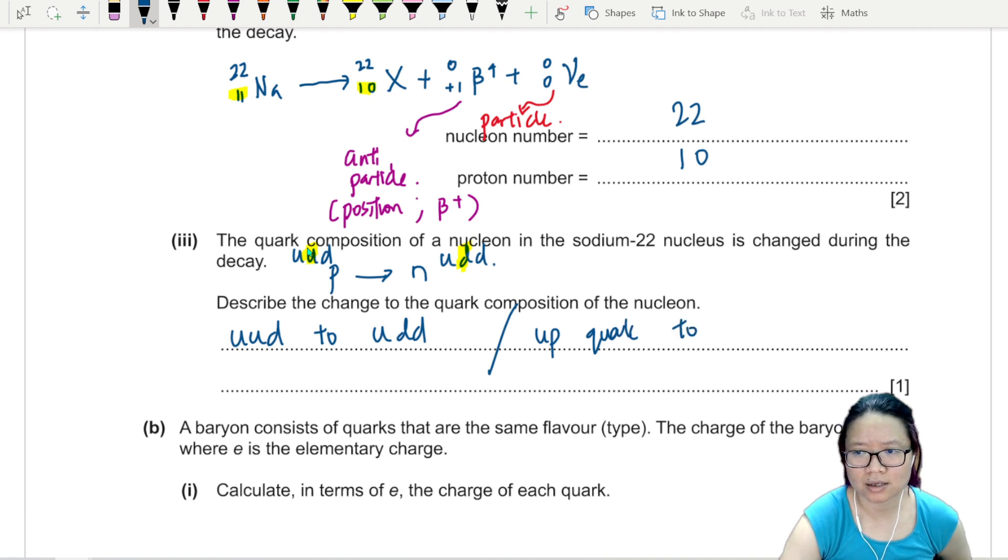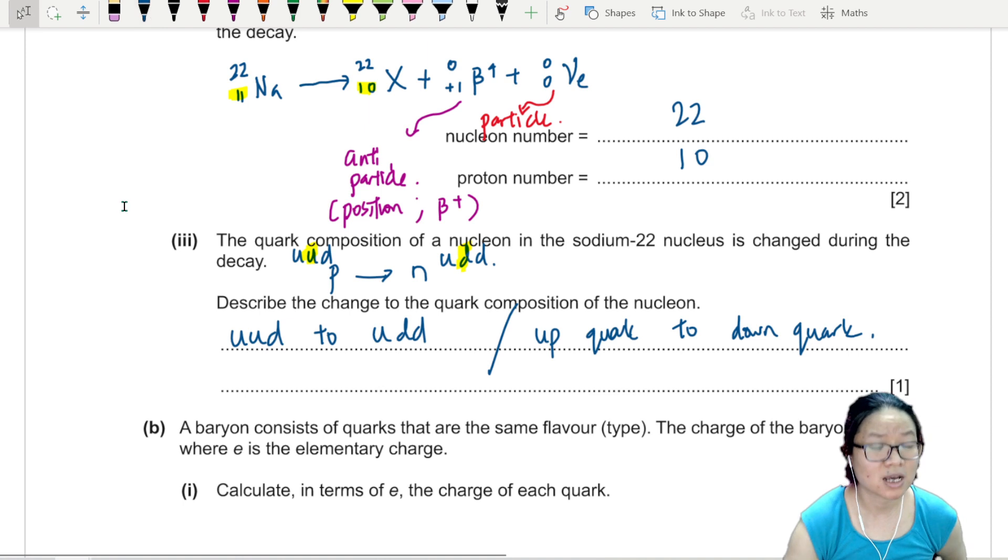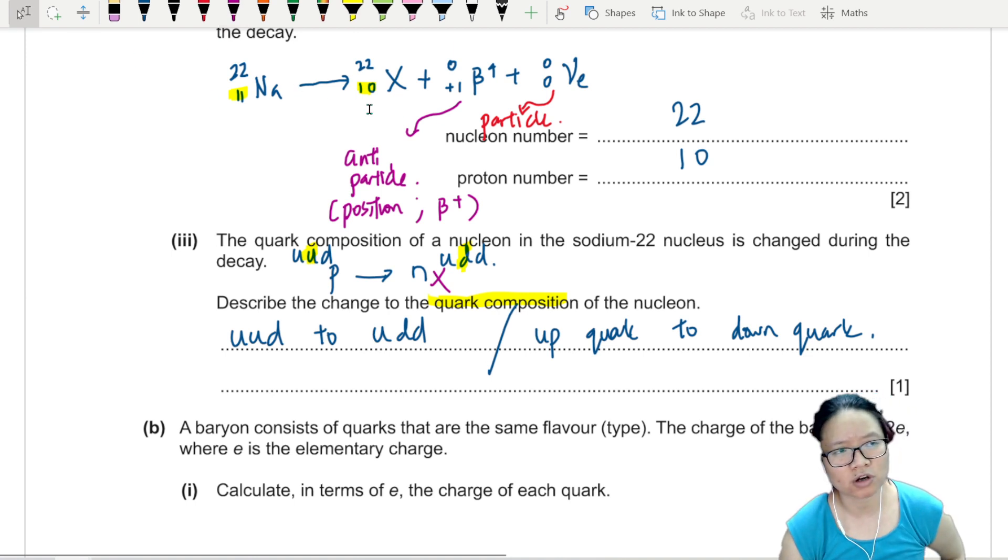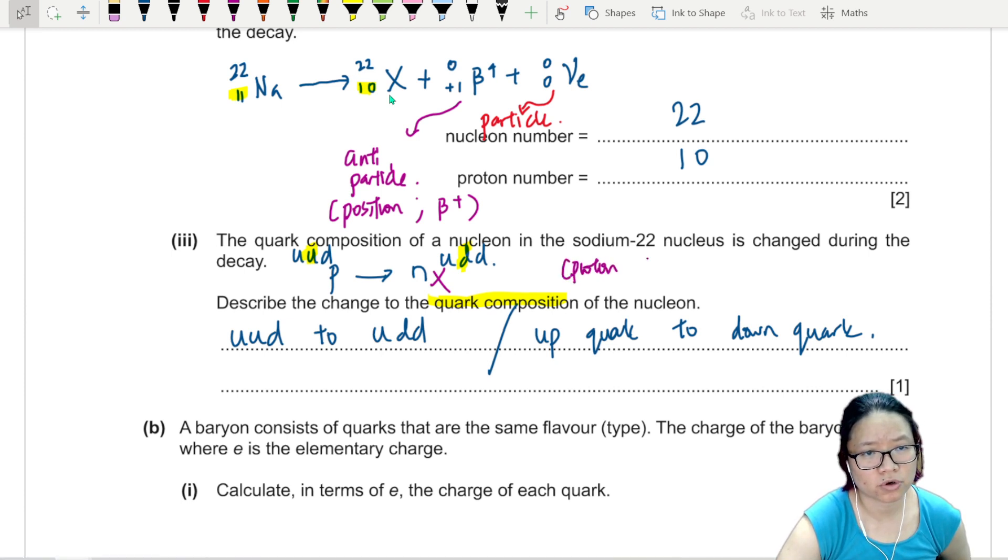If you write proton to neutron, then cannot. You're not answering the quark. How do I know the proton become neutron? Because the proton number dropped by one. Proton number decreased by one. Or you are familiar with the reaction? We study a lot of chemistry.